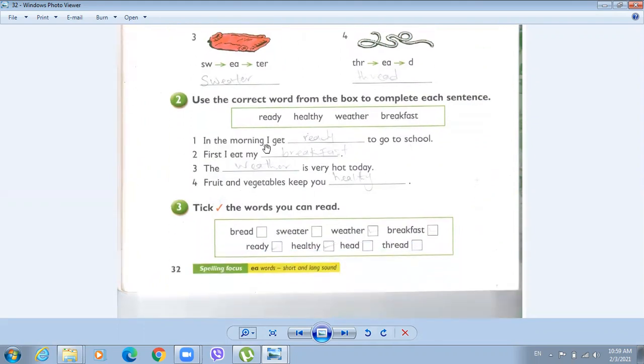Now, let's go to number 2. Use the correct word from the box to complete each sentence. We have the word ready. Ready. When you are ready for something, like when teachers say, 'Are you ready, students?'